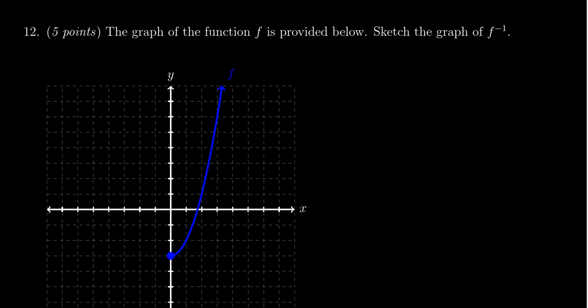We are given a one-to-one function f that we see illustrated below, and we're asked to sketch the inverse graph. That is, what's the graph of f inverse right here?